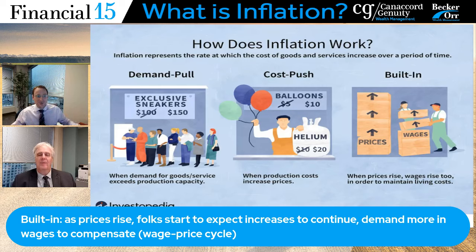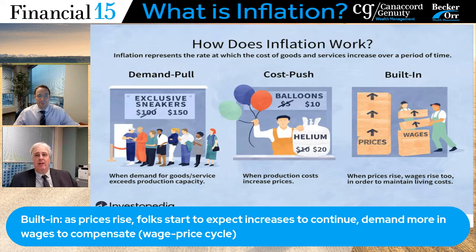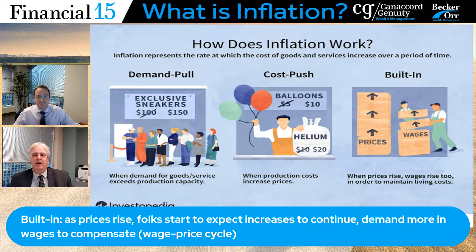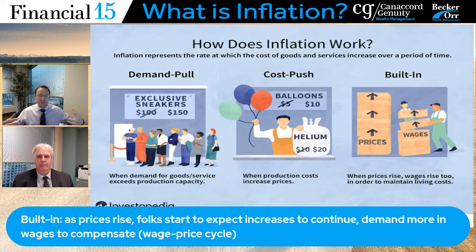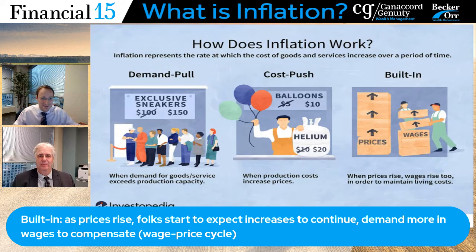The last cause is more to do with expectations — the built-in wage-price cycle. As prices go up, people say they need to compensate so they can afford what they used to. If costs have gone up by 5%, they're going to need a rise in their wages; otherwise, they can't live the same way. So wages increase as prices of goods increase. It's a bit of a cycle: if people realize inflation is not temporary and is sticking around, they negotiate higher wages, and then companies raise prices to compensate for higher wages — the wage-price cycle.